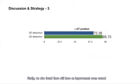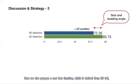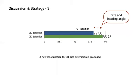Finally, we also found that there is still improvement room caused by the accurate estimation of 3D size and heading angles. Here, we also propose a new loss function, which is derived from the 3D IOU to better estimate the size of the object. Please refer to our paper for more details.